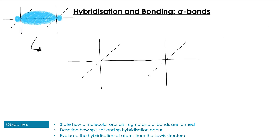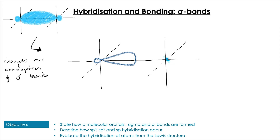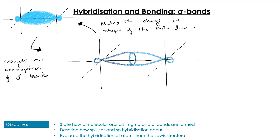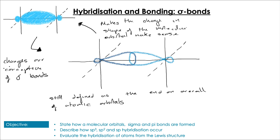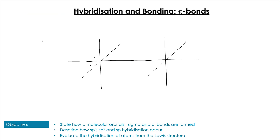Taken together, hybridization and molecular orbitals change our conception of sigma bonds and allow us to understand why we see these changes in geometry that line up with the Lewis structures we've been drawing. However, one thing we haven't addressed yet is double bonds and how they form in this system of inter-nuclear overlap.